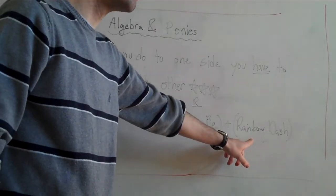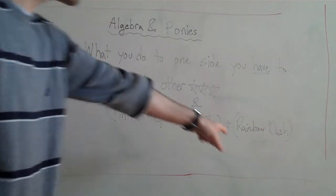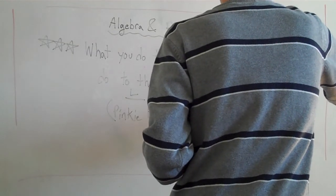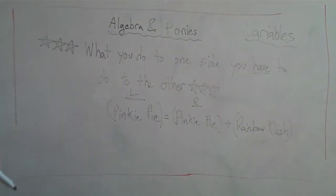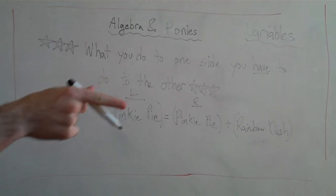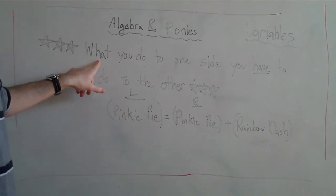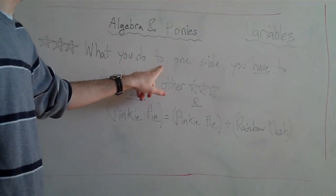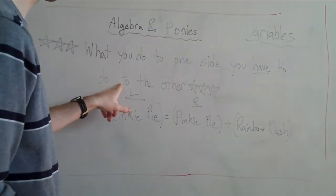If Rainbow Dash were a zero, this would be the same, because Pinkie Pie equals Pinkie Pie plus nothing. But we don't know what Rainbow Dash is, because we're doing algebra — algebra has variables. We can use my favorite rule, the most important rule, to fix it. Let's say it together: what you do to one side, you have to do to the other.